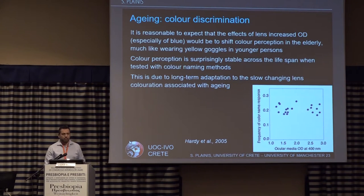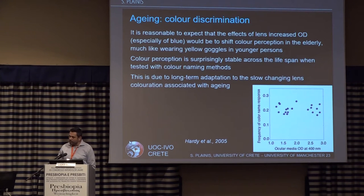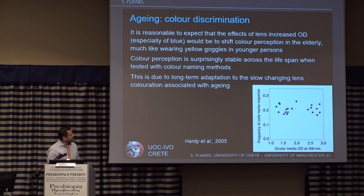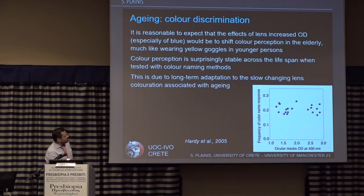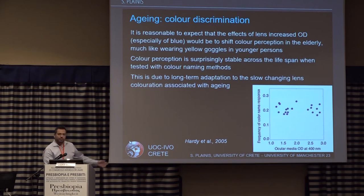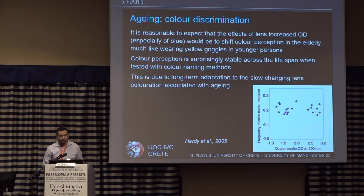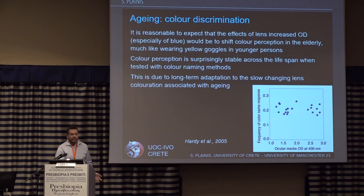A somewhat surprising finding concerns color discrimination. We would expect people with aging, yellowing lenses absorbing more blue light to shift their color perception significantly. However, data showing transmittance at 400 nanometers varying from 1.0 to 2.73 optical density units — about 100 times more absorption — found that color naming remained approximately the same. This may be due to long-term adaptation to the slow, gradual change in lens coloration with aging. So although we expect a big difference in color perception, in practice it may not actually occur.